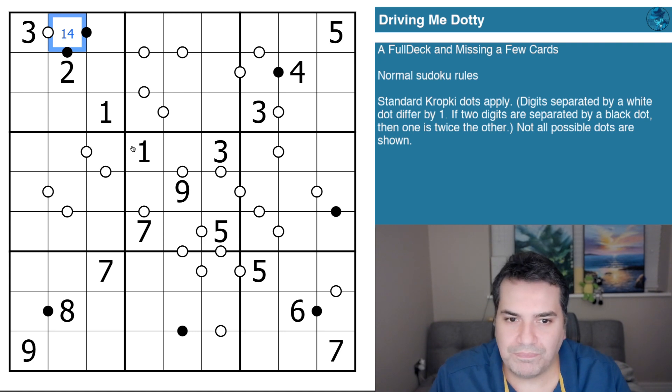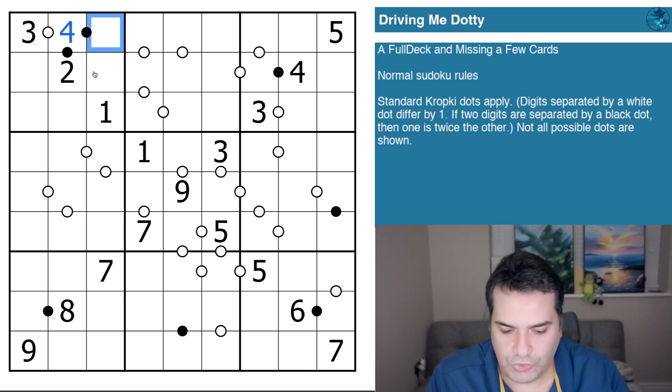One last rule we have is that not all possible dots are shown. So welcome to Sudoku variants, good luck with the puzzle. Let me restart the clock and see how I get on. Given I've sort of pretty much spelled this out, this is four, four times two is eight.